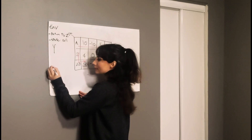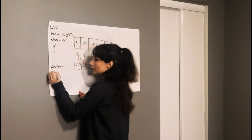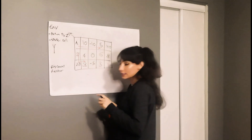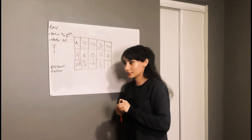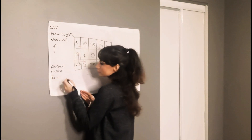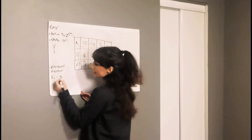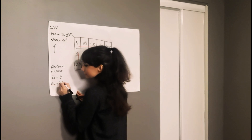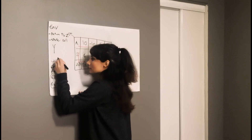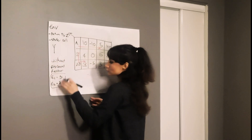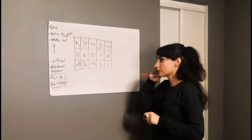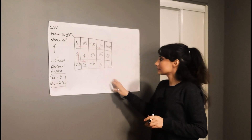Without discount factor: episode 1 equals 5 and episode 2 equals 25. So episode 2 is the winner without the discount factor.